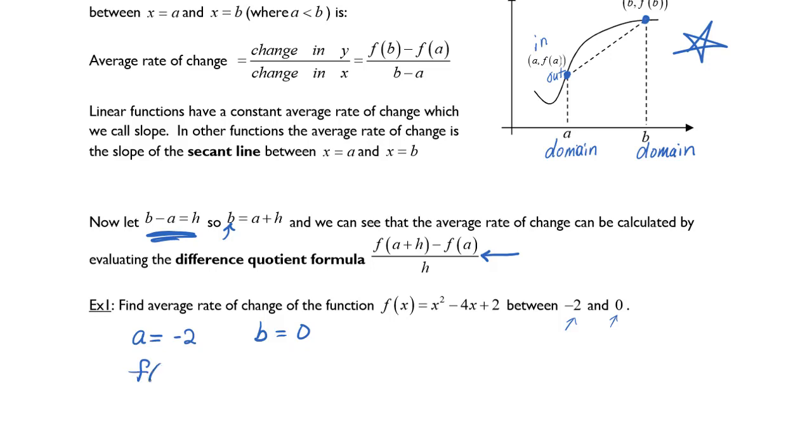Let's find f of negative 2, which is our f of a. That's going to be negative 2 squared minus 4 times negative 2 plus 2. Now let's find f of b which is f of 0. f of 0 is going to be 0 squared minus 4 times 0 plus 2.